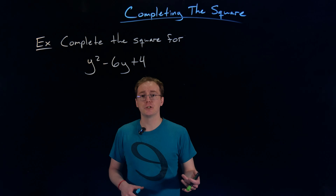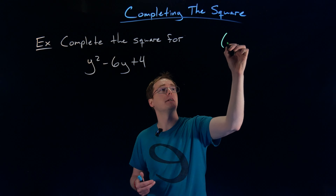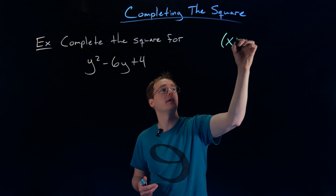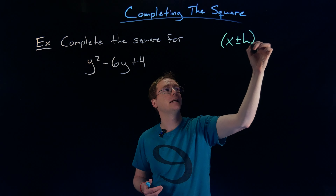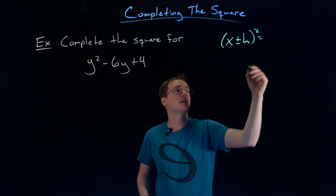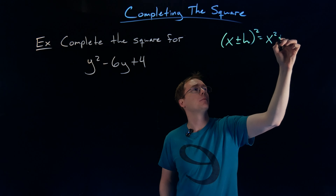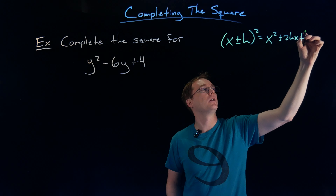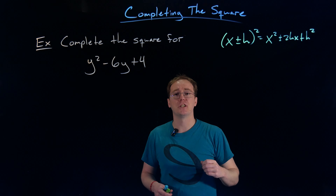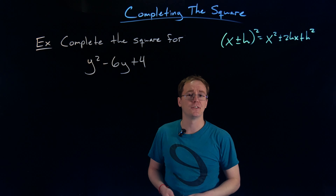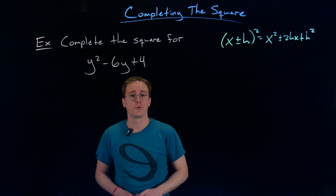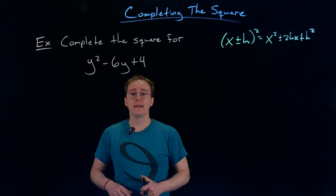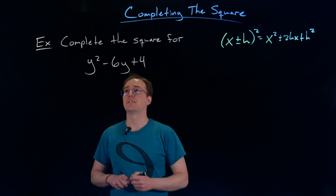Without going into a total re-derivation of completing the square, remember when we're completing the square we're trying to exploit the pattern that we get when we expand something like x plus or minus h squared — that always expands to x squared plus or minus 2hx plus h squared. So we're trying to complete the square. We usually focus on that linear coefficient, and that helps us determine the constant term that we need to add in or adjust for.